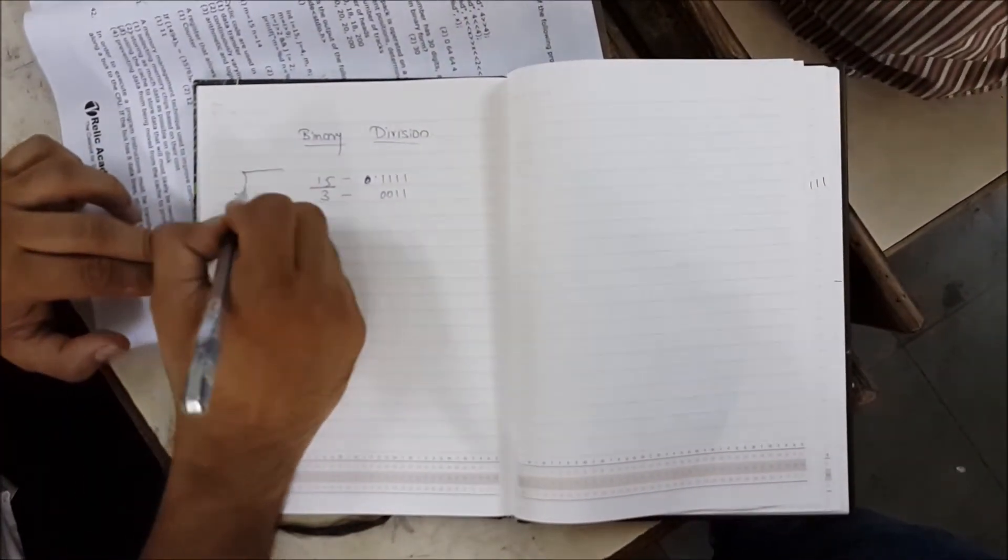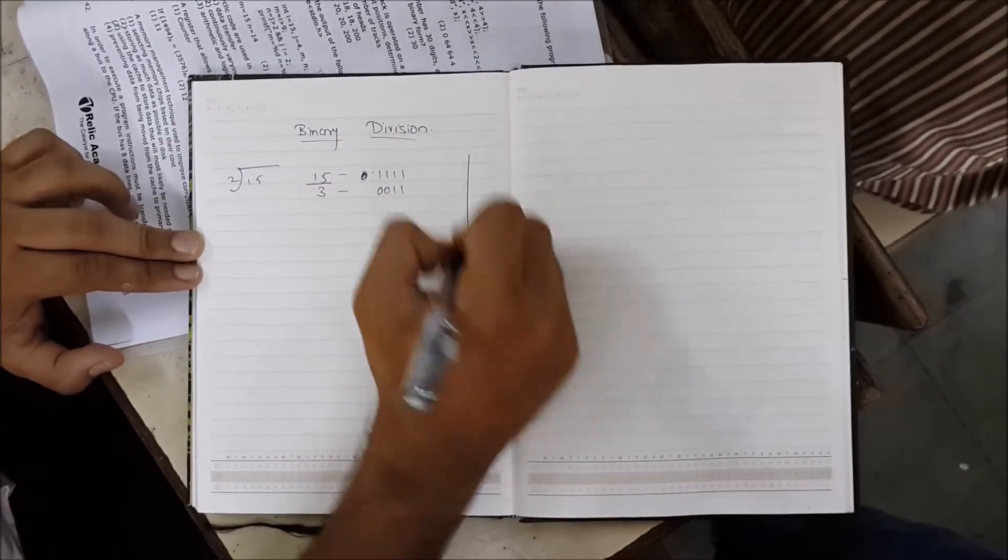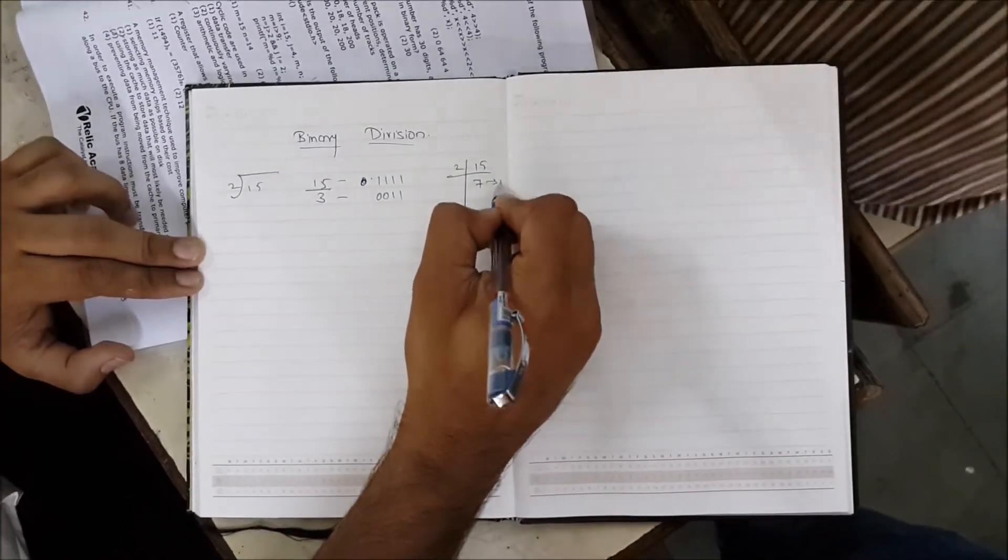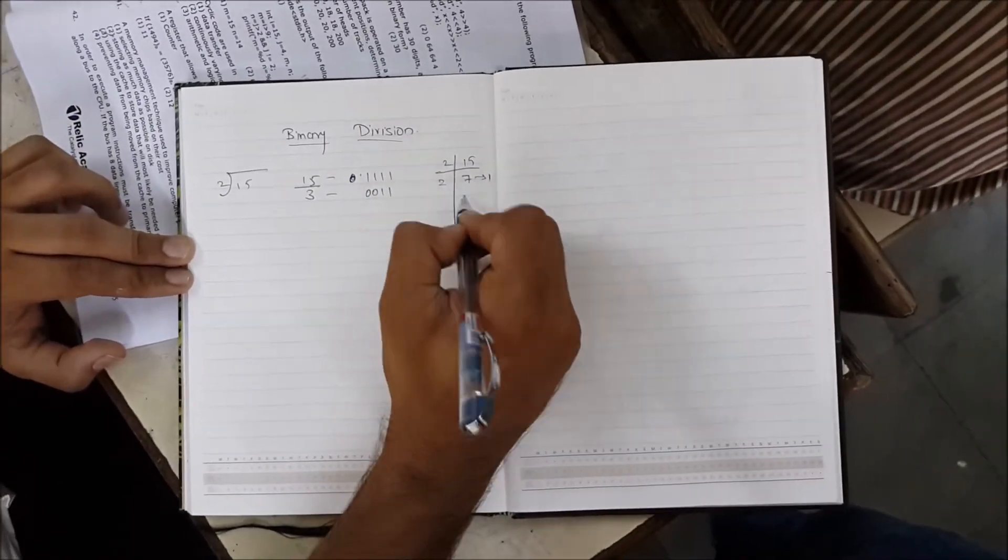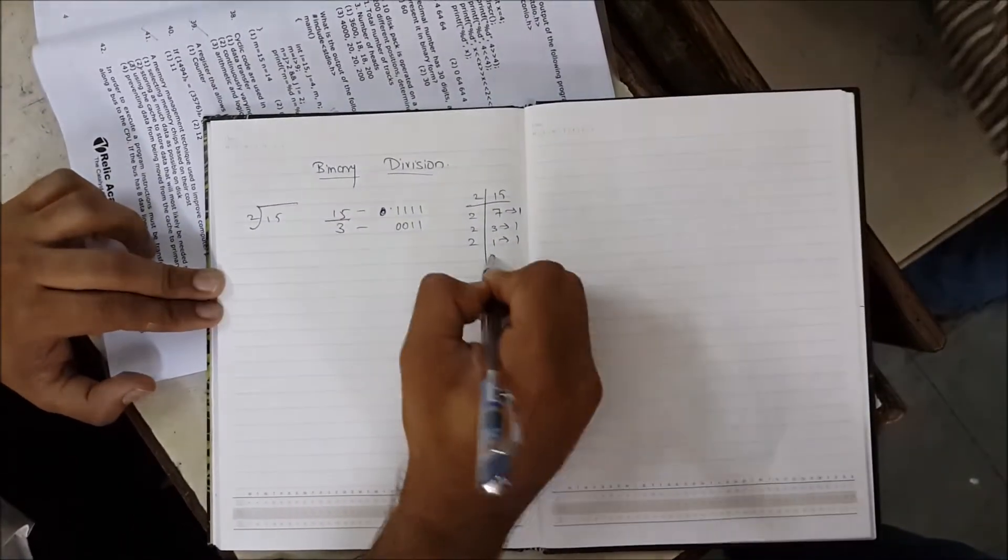Now to convert to binary, you divide the number by 2. So 15 divided by 2 is 7 remainder 1. Then 2 into 3, remainder 1. 2 into 1, remainder 1. And 2 into 0, remainder 1. You read upwards, so that's four ones.